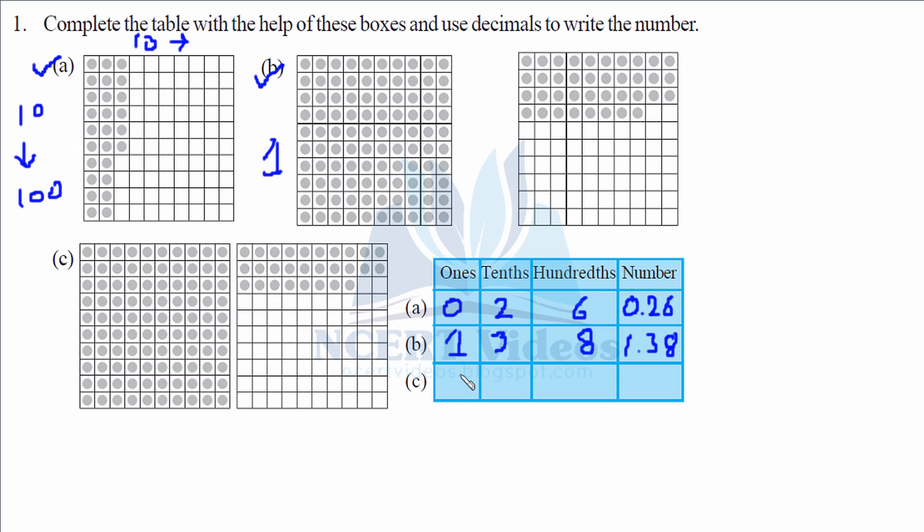C part. 1 again. Now counting them. 10, 20, 2 less than 30. So it would be 28. So 1.28, not 1.28. That makes your question number first C part.